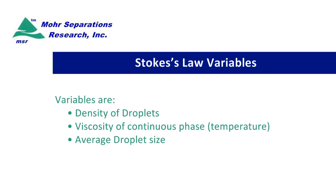The key variables are: the density of the droplets, the viscosity of the continuous phase which is the water and that's dependent upon the operating temperature, and the average droplet size — which is the biggest single variable because it's a squared function.